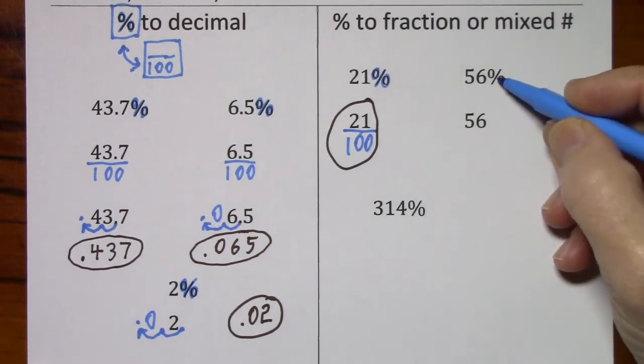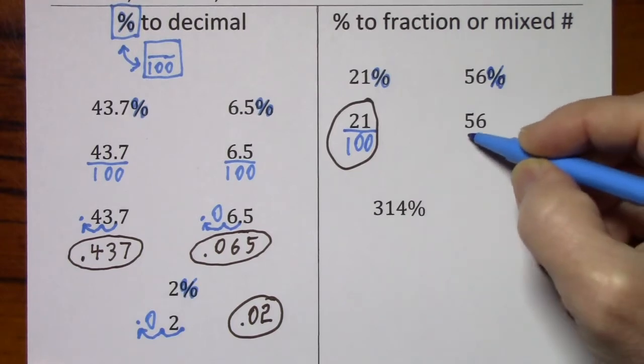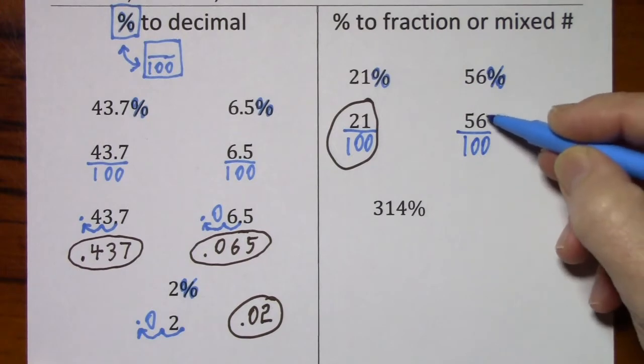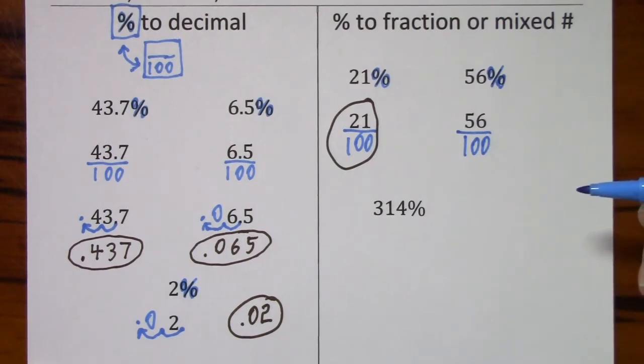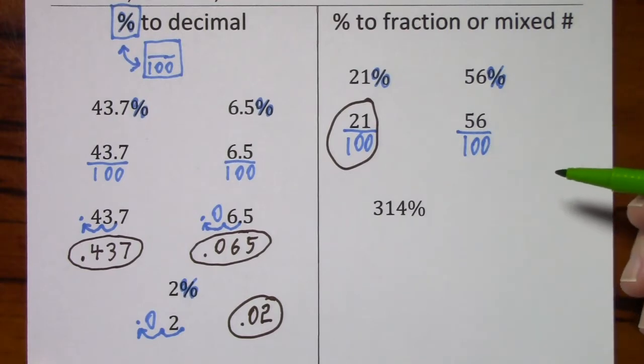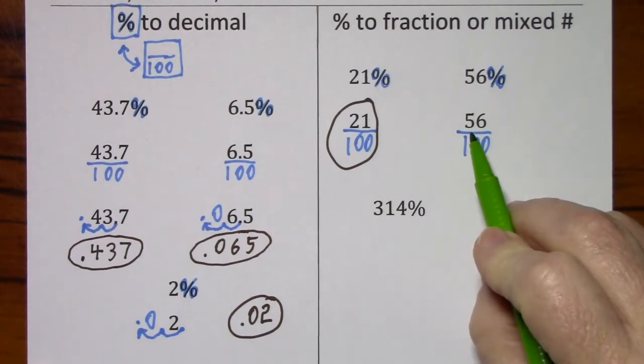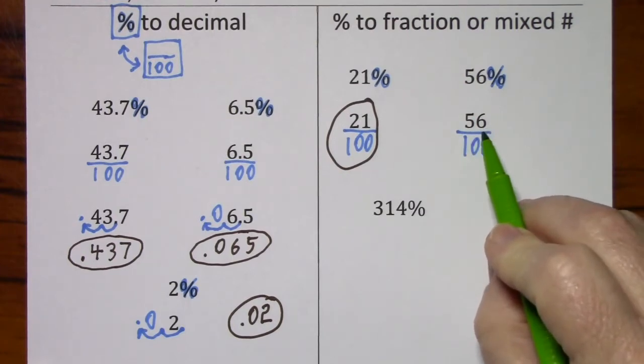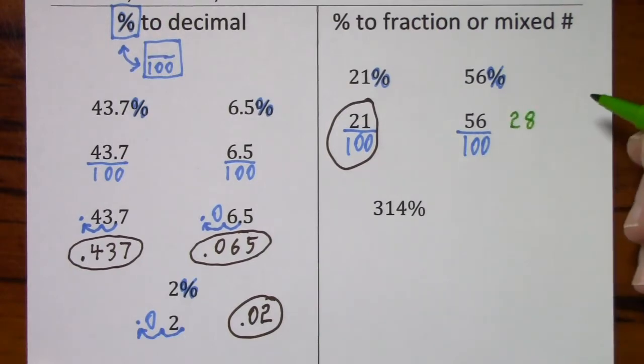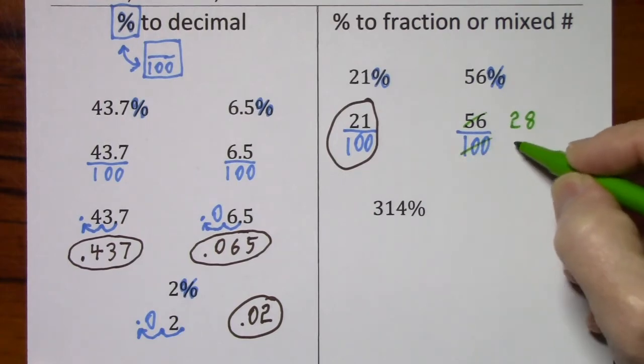With the next problem, I want to get rid of this percent sign, understanding that it means per 100. Here I have to keep going. There's a common factor of 2. So if I divide by 2, divide by 2, I'm really just cutting it in half. Half of 50 is 25. Half of 6 is 3. So that's 28.